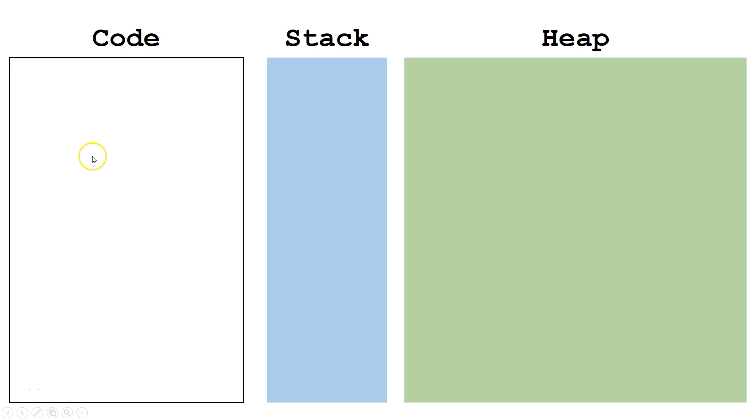For this demonstration, we've got three boxes. The first will represent our code. The second will represent the data structure of the stack. And the third will represent the data structure of the heap.